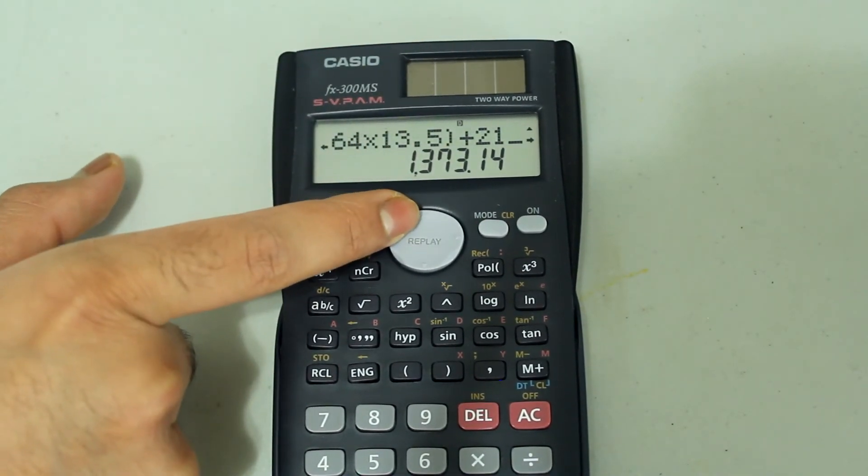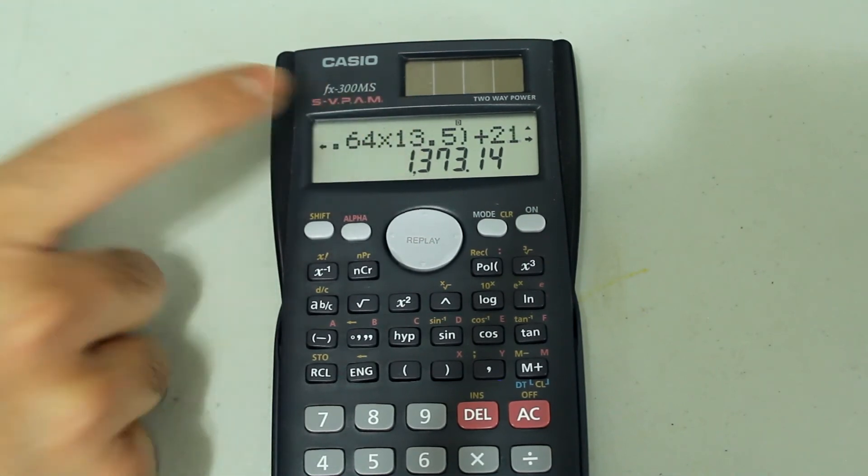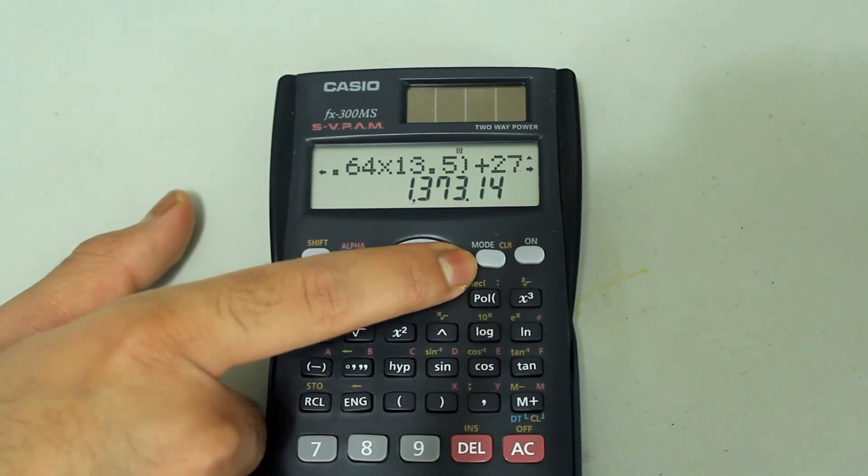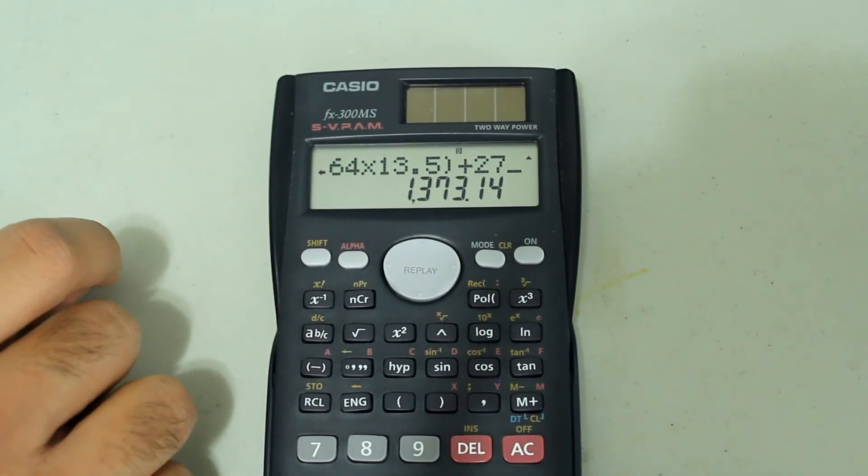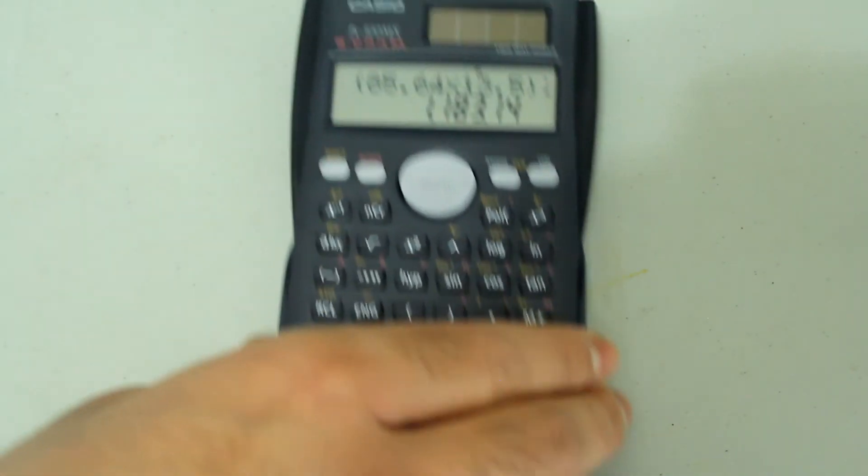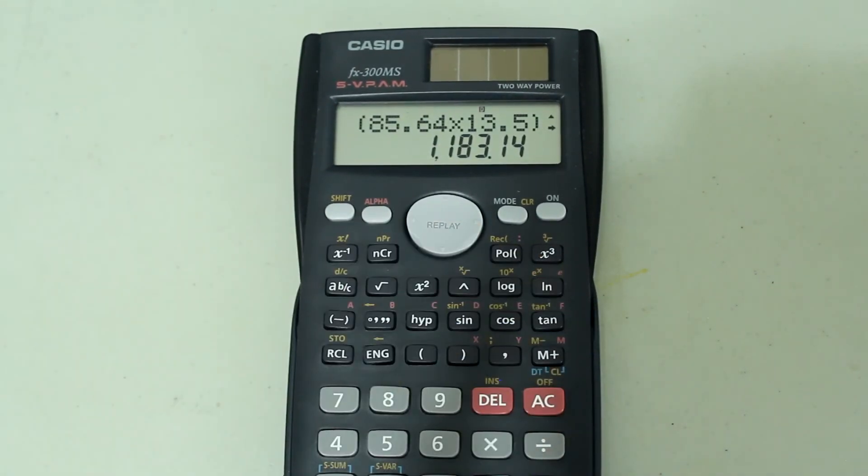So when the cursor is blinking on the 1, just simply press the delete button and that goes away. Arrow right to make sure everything else is okay, and then press the equals button and you get your answer.